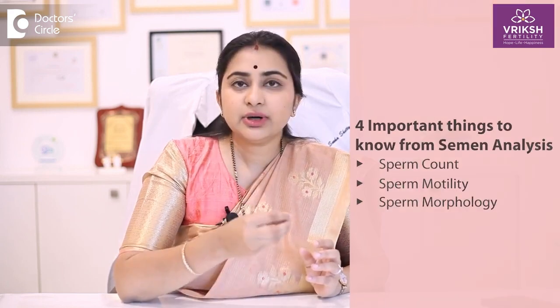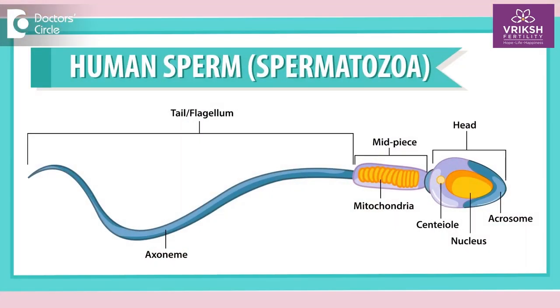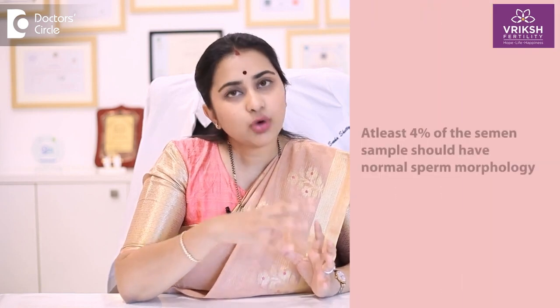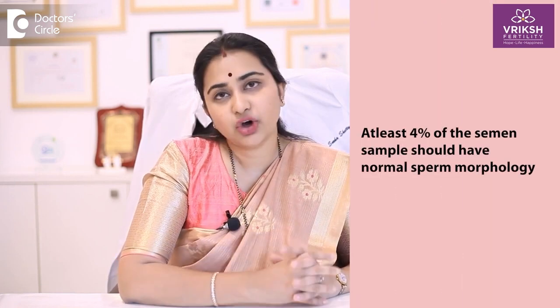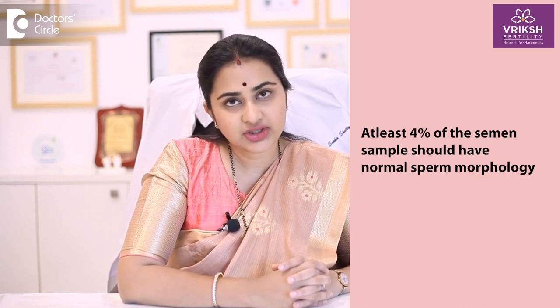Apart from this, the third point is how many are having normal morphology. The sperm has a head, a middle piece which is the neck, and a tail. These three parts should be in good normal form. At least four percent of the entire sample should have normal morphological sperms.